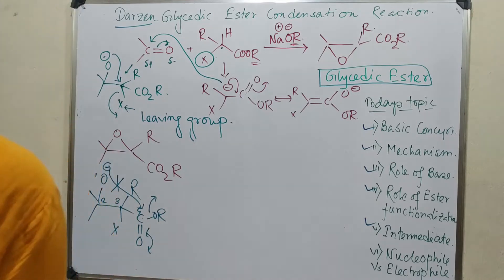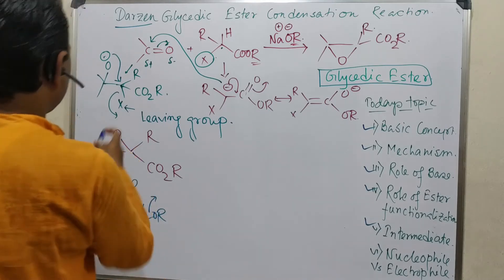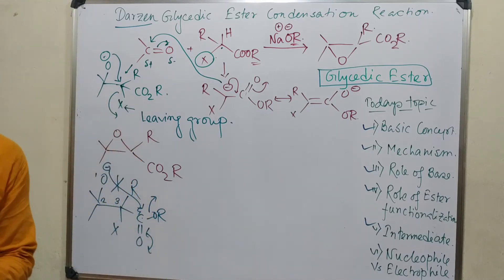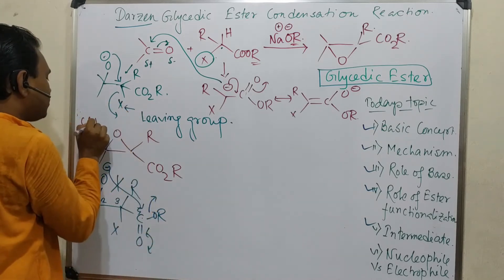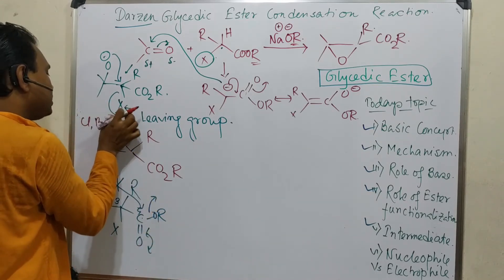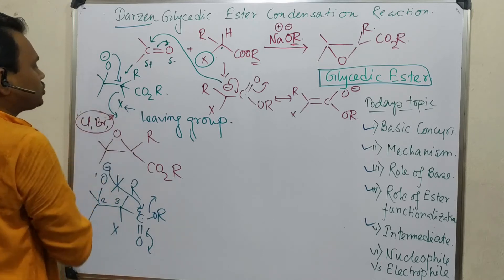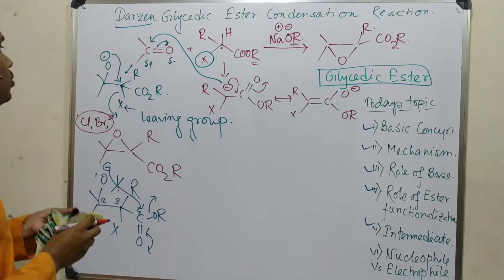Actually, frankly speaking, this is very difficult to detect. Why? Because this is the halo group - this X is a good leaving group. What do I mean? Since it's chloride or bromide like that, then it is very difficult to separate because whenever this alkoxide will be produced, this reaction will undergo.